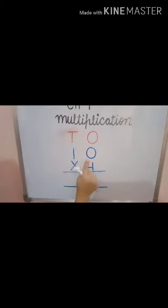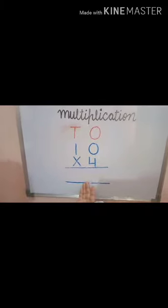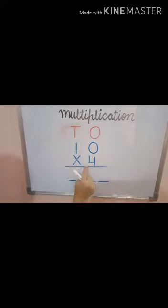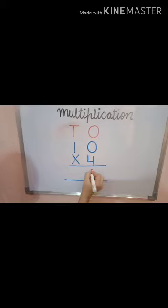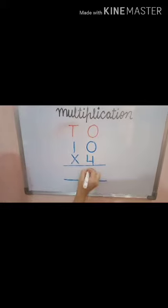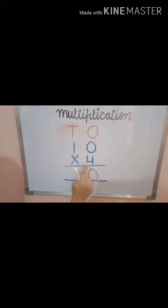We multiply 4 by 0. We know anything multiplied by 0 is 0. Then we take the same 4 and multiply by the next position.